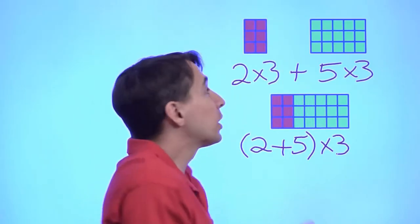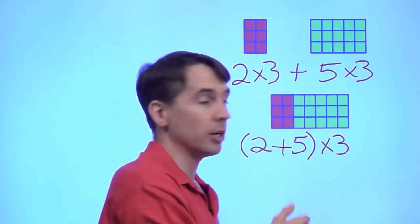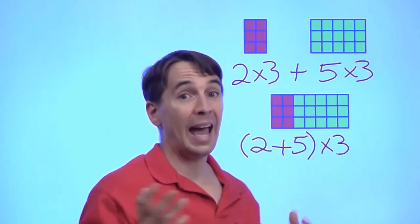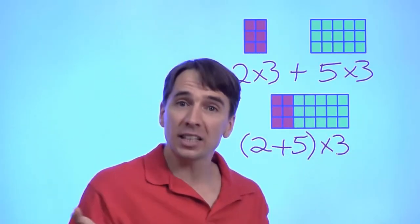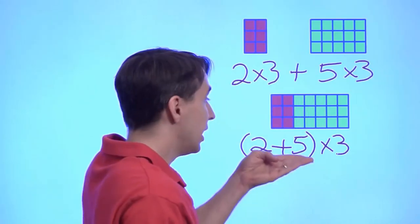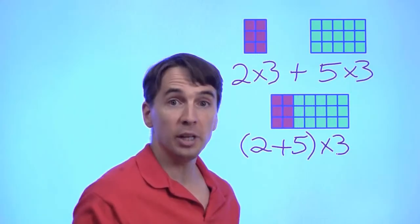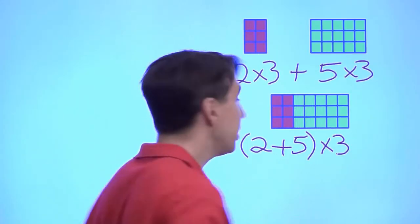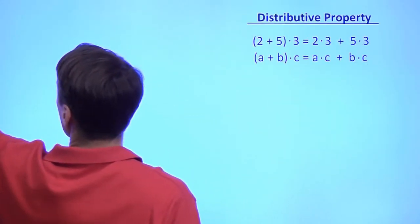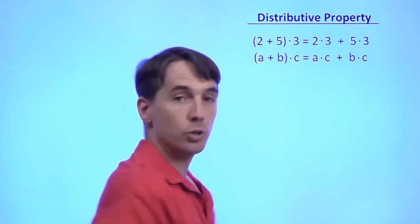Now of course, we're counting the same group of little squares in both cases here. So these two totals have to be the same. And that's what the distributive property tells us. This expression equals that expression. Now there's nothing special about two, three, and five here. We can do the same thing with any three numbers. And that's the distributive property.